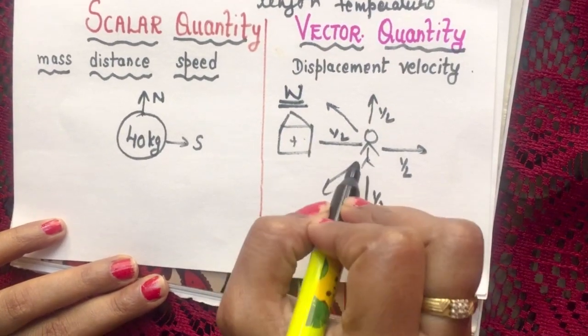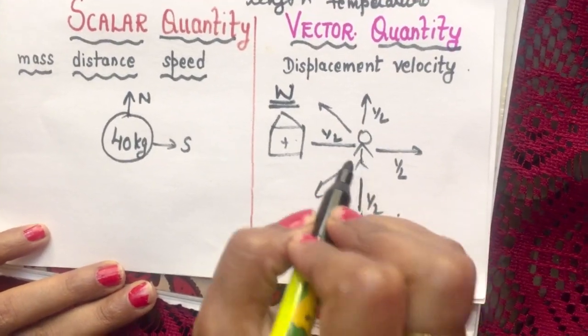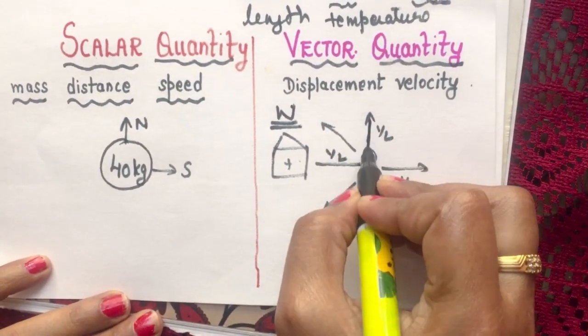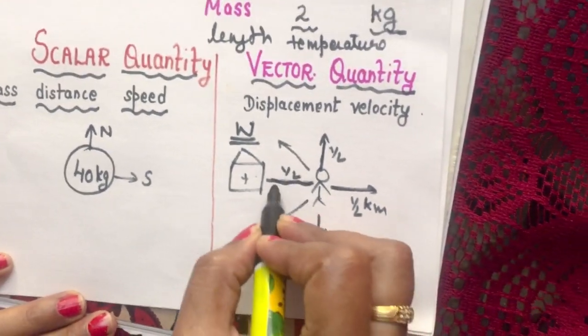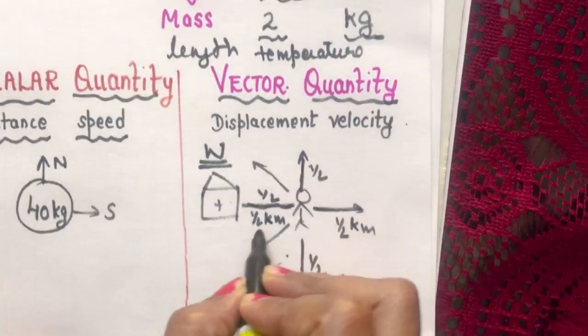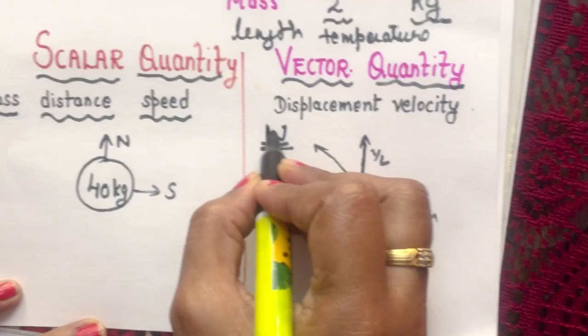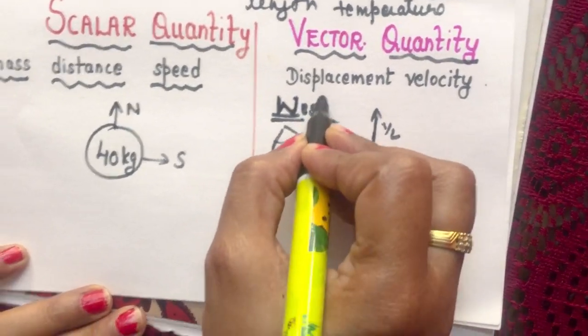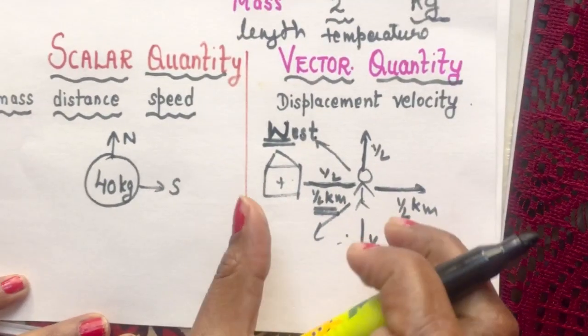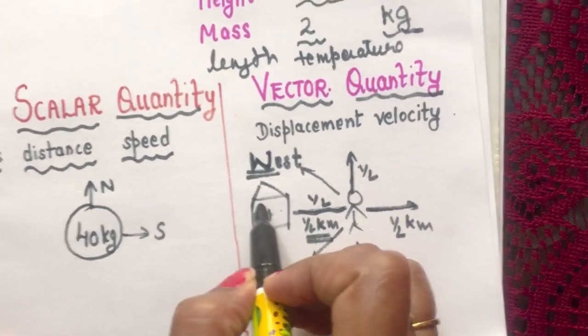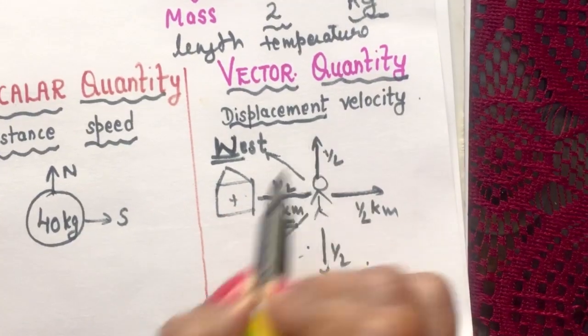So he has to specify you clearly that move half kilometer towards the east or towards the west direction. So he has to mention clearly in which direction you have to move. So if you call this half kilometer the length of the path, and in this we are associating a direction that is west, so this is known as displacement. The distance which is associated with direction is known as displacement.